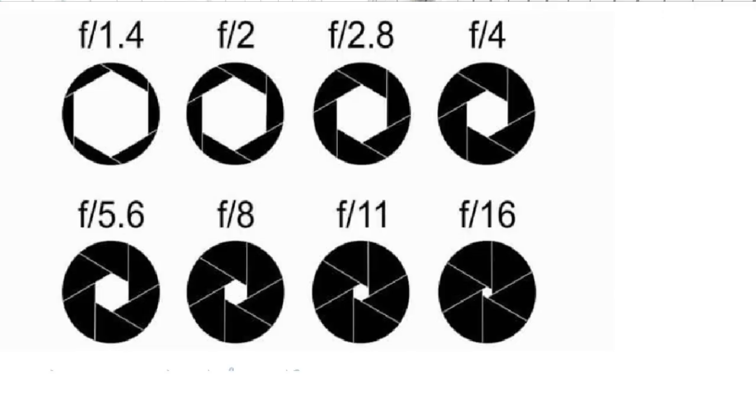Increasing the aperture value increases depth of field, while decreasing the aperture value decreases depth of field. For example, in mobile, many people use bokeh mode. In bokeh mode, the object will be more focused but the background will be more blurred. This effect is achieved when the F value of the lens is lower — meaning the opening is wider. If you want to focus on every object in the scene, you need a higher F value so the lens opening is narrower and all objects will be in focus.